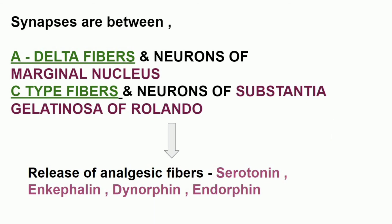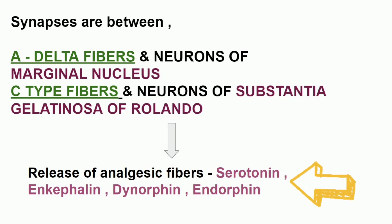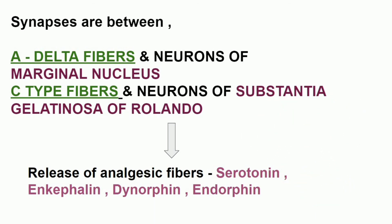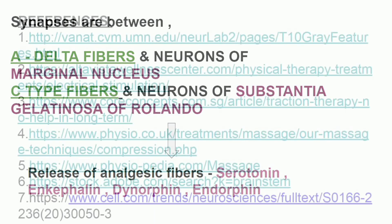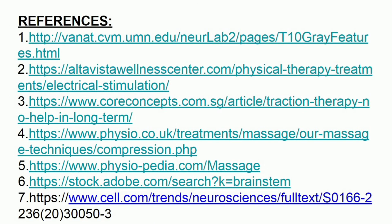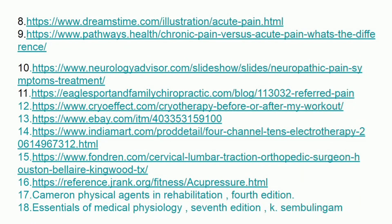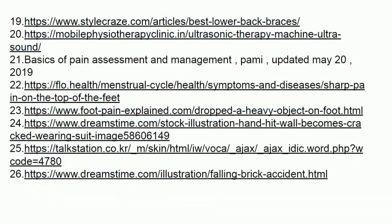Pain from the spinal cord goes to higher centers and again descends with the help of serotonin, endorphin, enkephalin, and dynorphin to inhibit pain — this is called the endogenous opioid system, which was discovered in the year 1973. I hope you got to know some information about how pain is transmitted and the underlying mechanism. Thank you so much for watching.